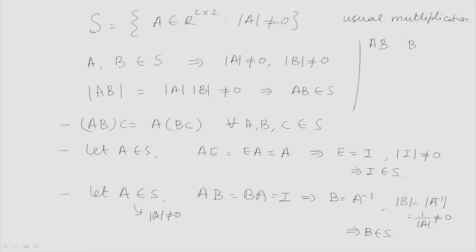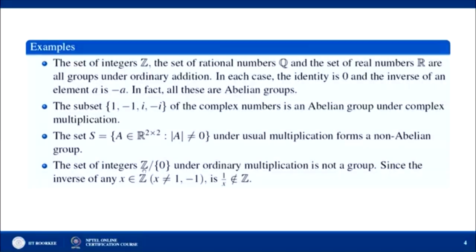This set S is a non-abelian group because A·B need not equal B·A for all A, B in S — matrix multiplication is not commutative in general. Also, the set of integers Z excluding 0 under ordinary multiplication is not a group, because while the identity element 1 exists, the inverse of an element like 2 would be 1/2, which is not in Z.